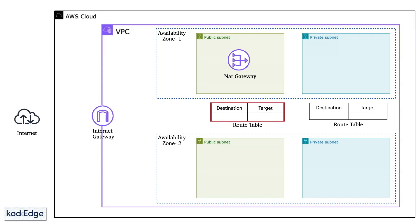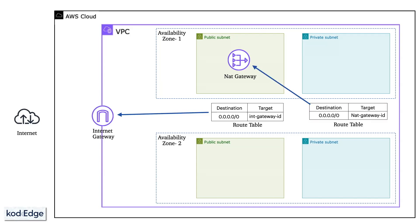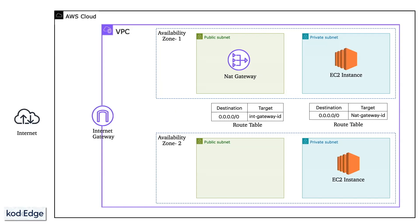We will add an entry in the public subnet routing table for the internet gateway, because of which components deployed in the public subnet will get access to the internet. Next we will add an entry for the NAT gateway in the routing table of the private subnet, because of which components deployed in the private subnet will get access to the internet using the NAT gateway. After that we will deploy EC2 instances in the private subnet and create an application load balancer deployed into the public subnet.